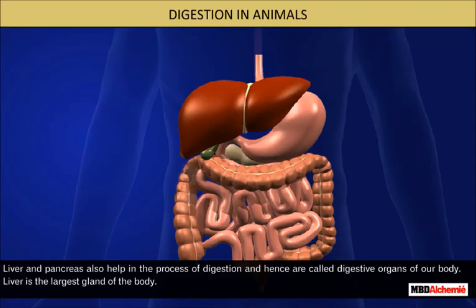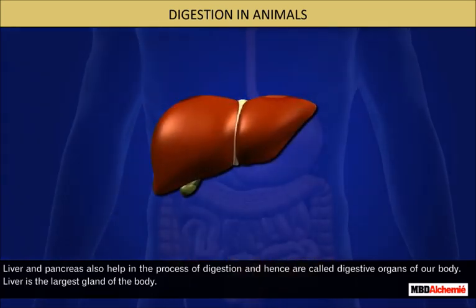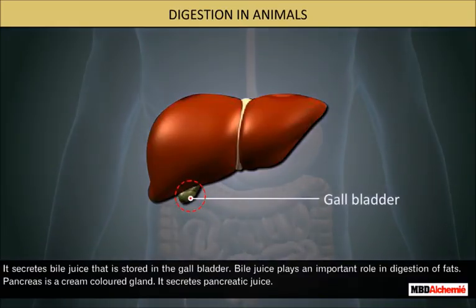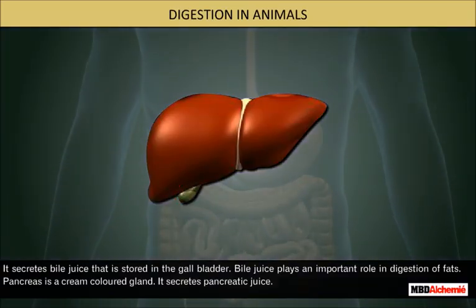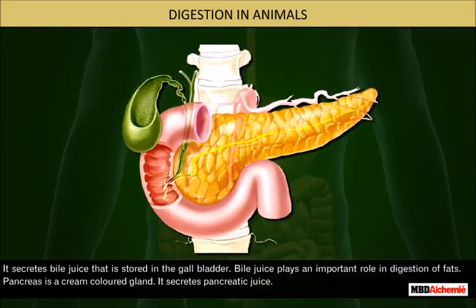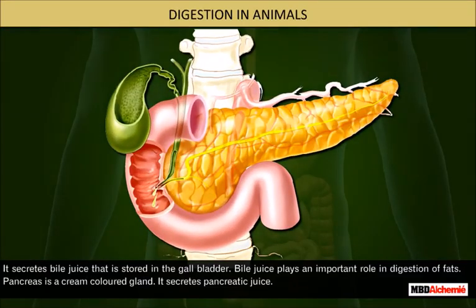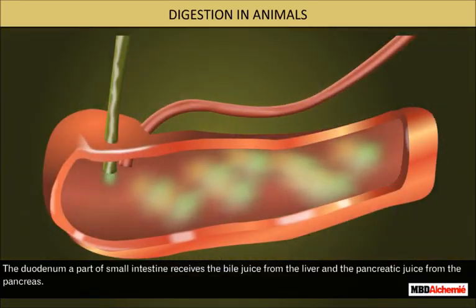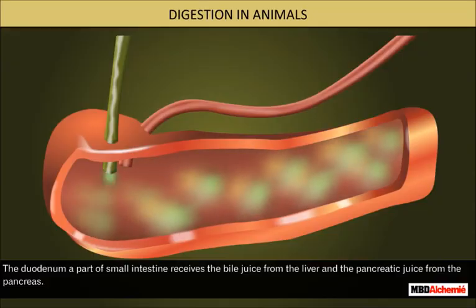The liver and pancreas also help in the process of digestion and hence are called digestive organs of the body. The liver is the largest gland of the body; it secretes bile juice that is stored in the gallbladder. Bile juice plays an important role in the digestion of fats. The pancreas is a cream-colored gland that secretes pancreatic juice. The duodenum, a part of the small intestine, receives the bile juice from the liver and the pancreatic juice from the pancreas.